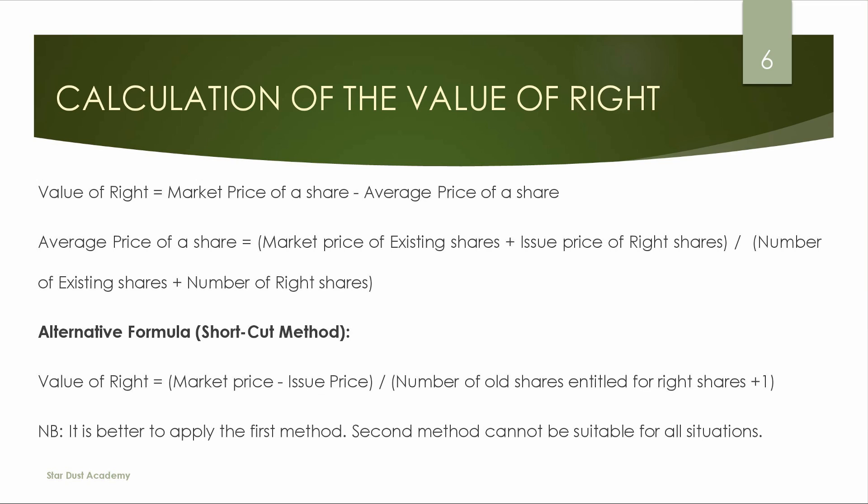Let's look at the steps. We compare the average price and the market price, and the difference is the value of right. Value of right = Market price of a share minus Average price of a share.